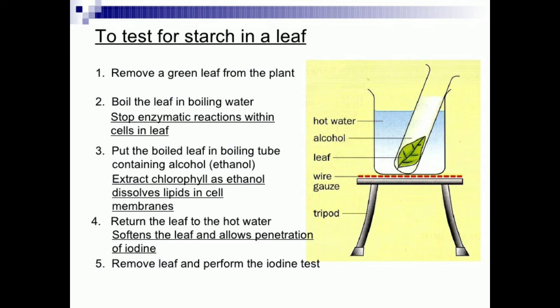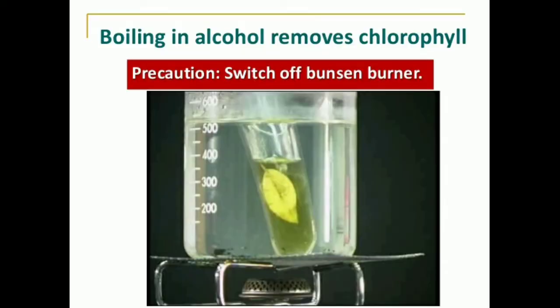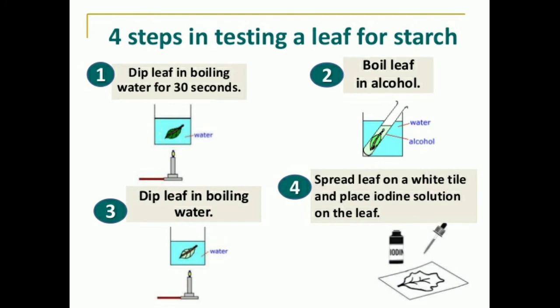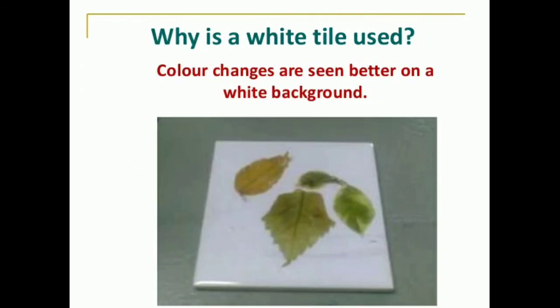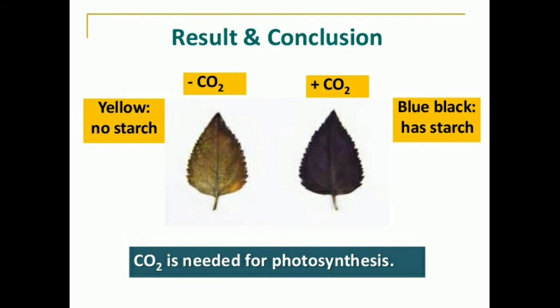Ethanol dissolves lipids in cell membranes. The leaf is then returned to hot water to soften it and allow penetration of iodine. We then remove the leaf and perform the iodine test. We observe that the leaf from setup A does not show any color change, while the leaf from setup B changes color to bluish-black, showing the presence of starch. Therefore, this experiment shows that carbon dioxide is needed for photosynthesis.